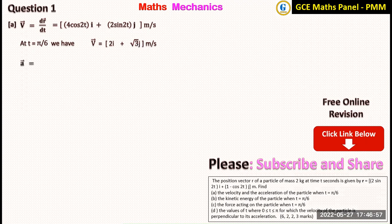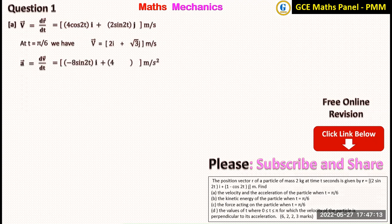For the acceleration, we differentiate the velocity and evaluate at t equals pi on 6. Differentiating the velocity gives us minus 8 sine 2t i plus 4 cos 2t j. At t equals pi on 6, this gives us acceleration equal to minus 4 root 3 i plus 2 j meters per second squared.